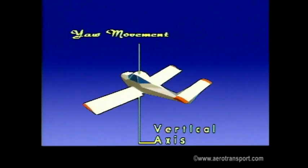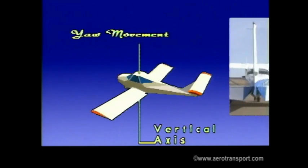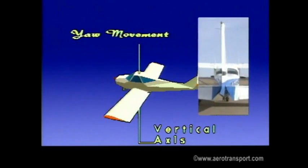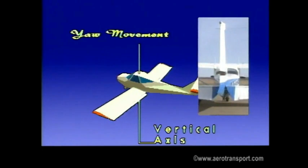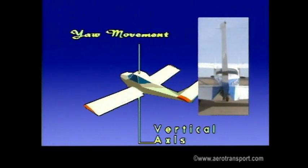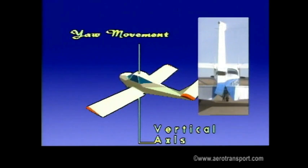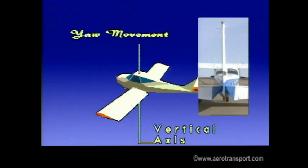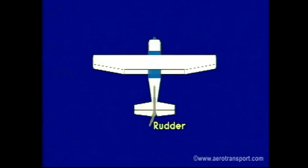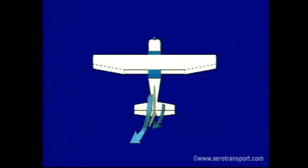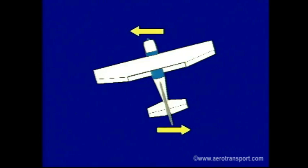Yaw is the movement around the vertical axis and is controlled by the rudder, which is hinged to the fin or vertical stabilizer of the aircraft. Foot pressure on the left rudder pedal causes the rudder to move to the left. This increases the camber of the fin, causing a mass of air to flow to the left. The result is the tail of the plane moves right, while the nose moves to the left. Using the right rudder pedal produces the opposite effect.